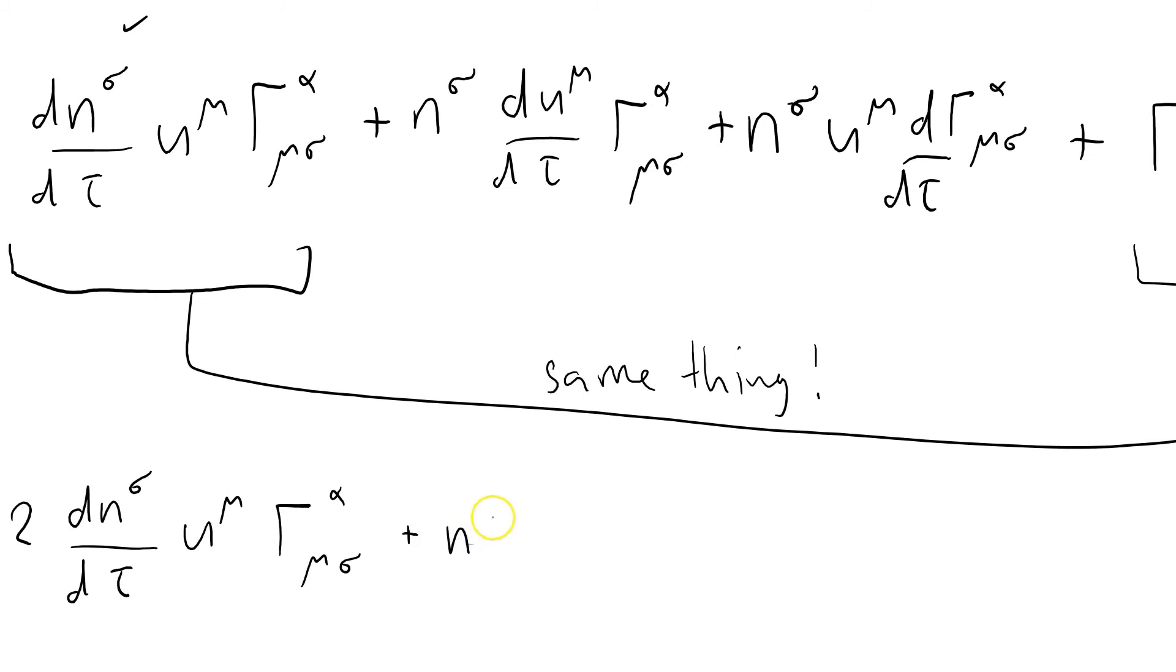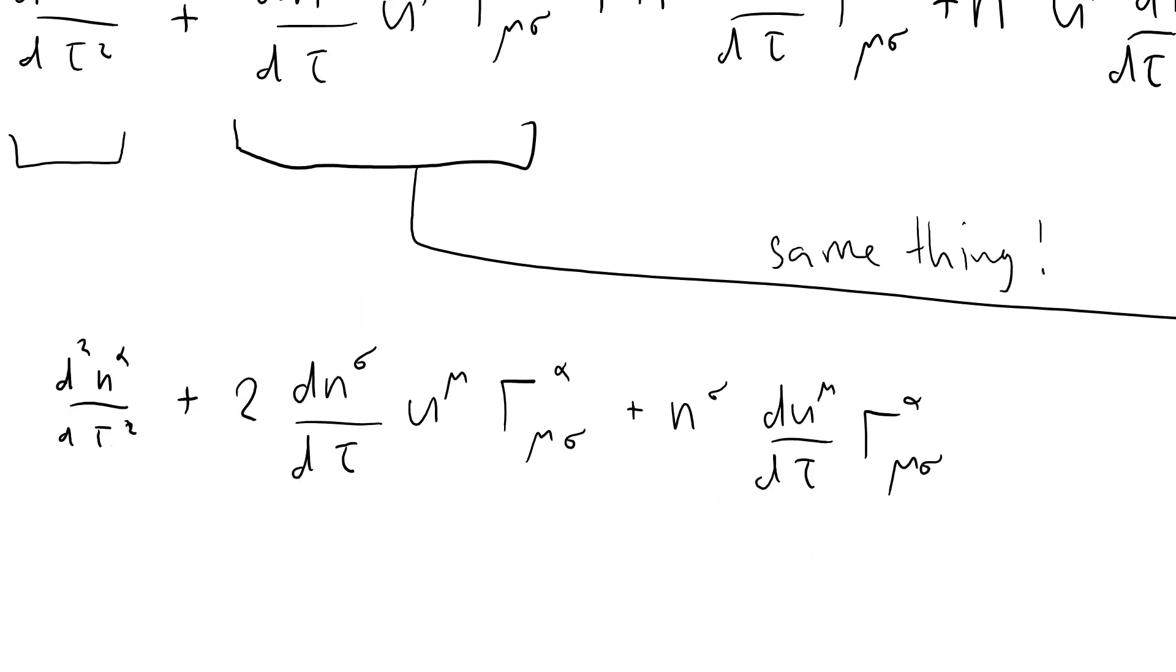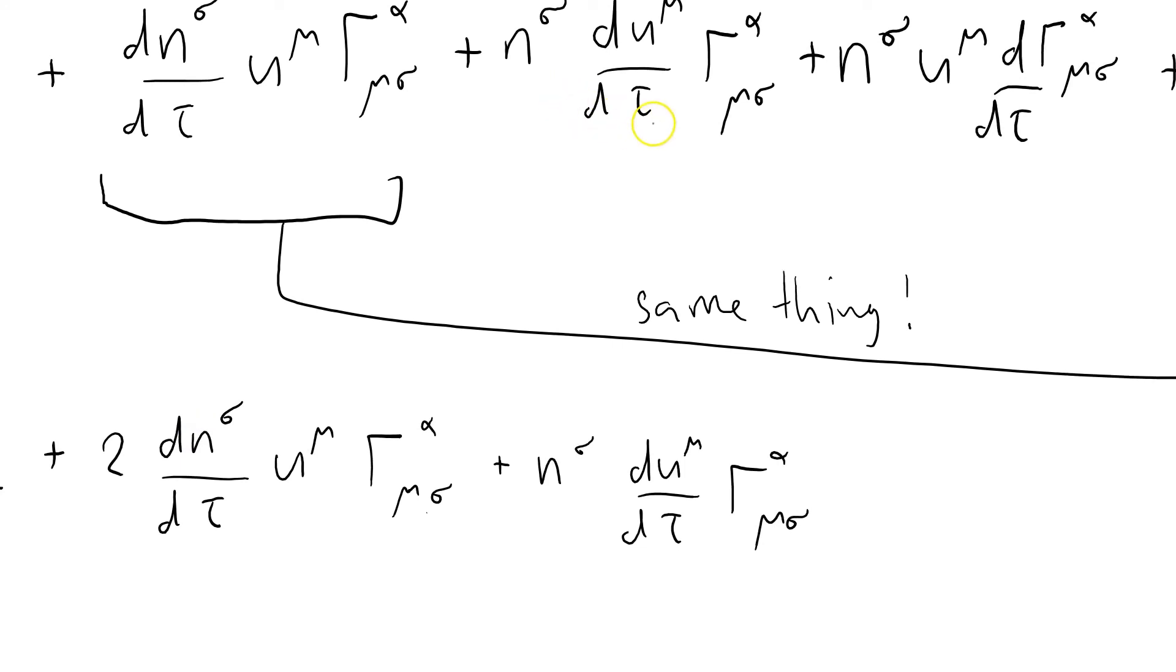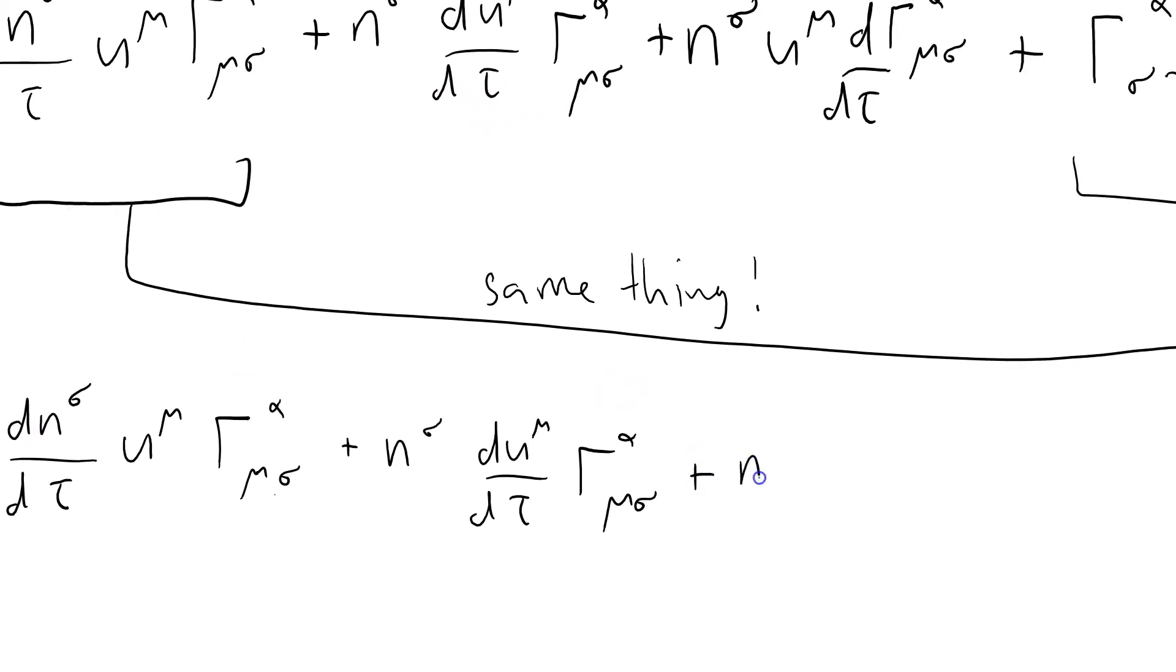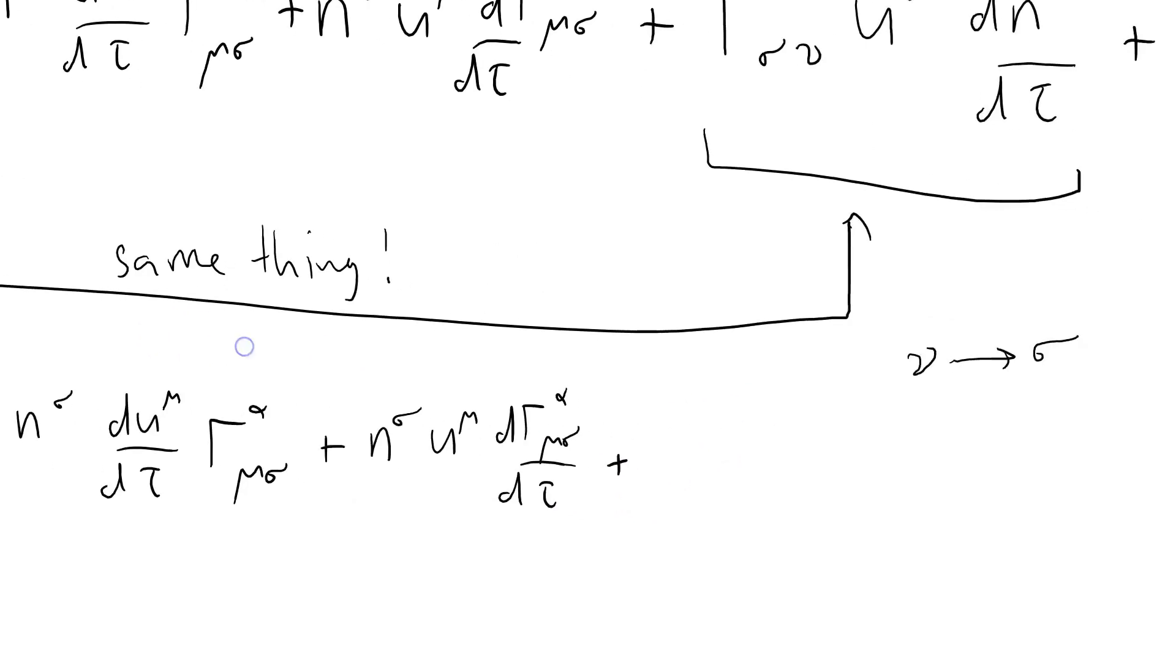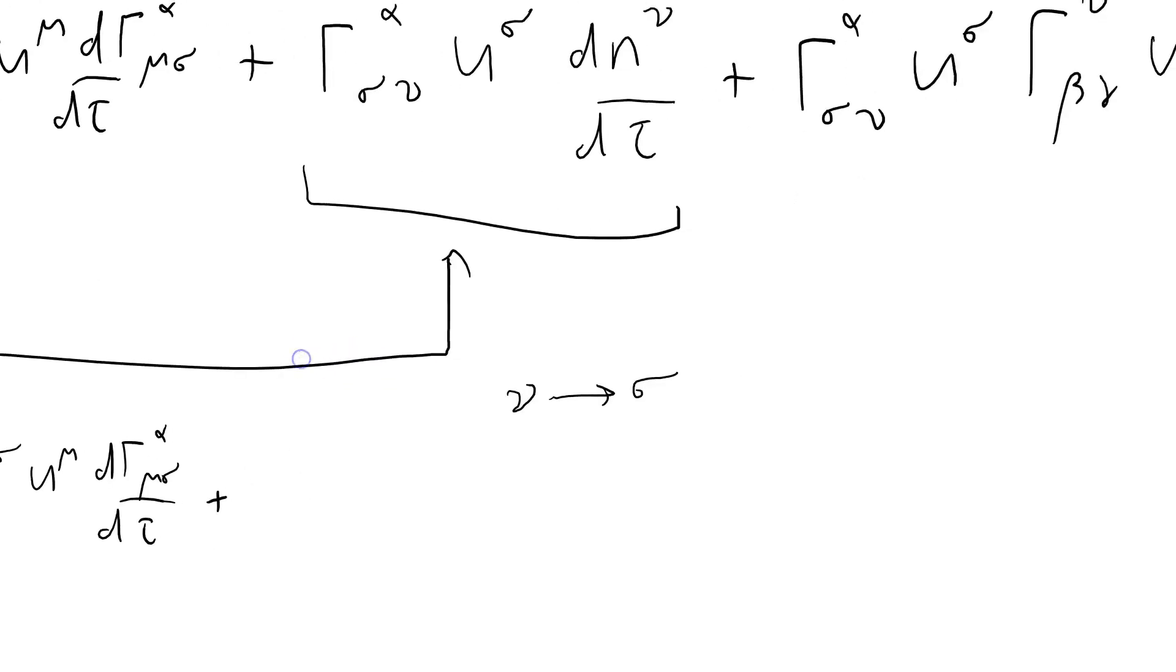What have I got left? Plus n sigma d u mu by d tau Christoffel alpha mu sigma. It's as well just to have a running check of what's going on here. The sigma sums with this sigma and the mu sums with that mu, so we've just got a single free index alpha on the top here. Plus n sigma u mu d Christoffel alpha mu sigma by d tau.